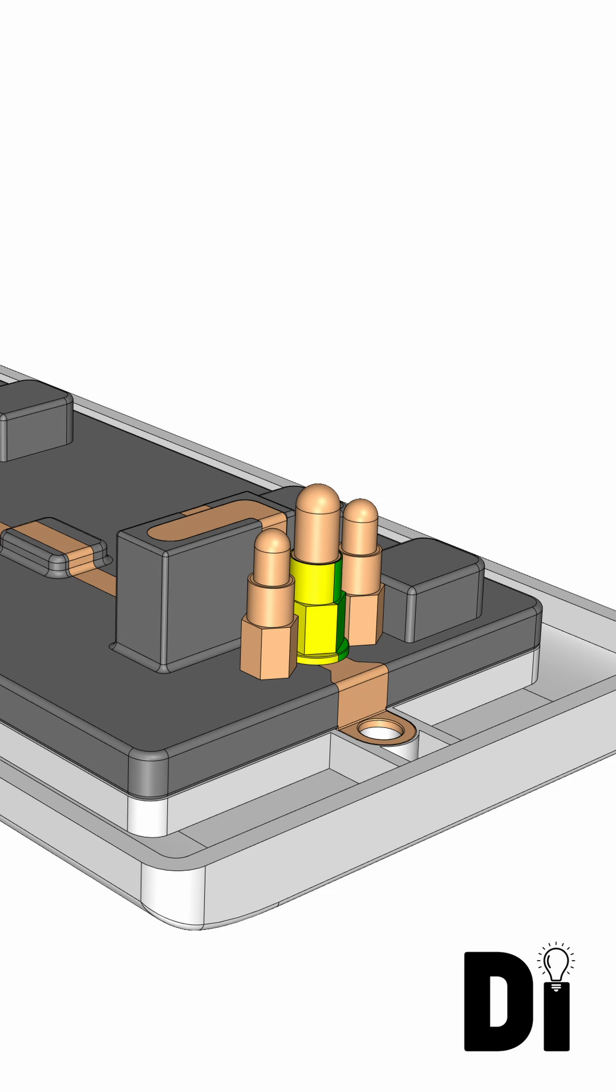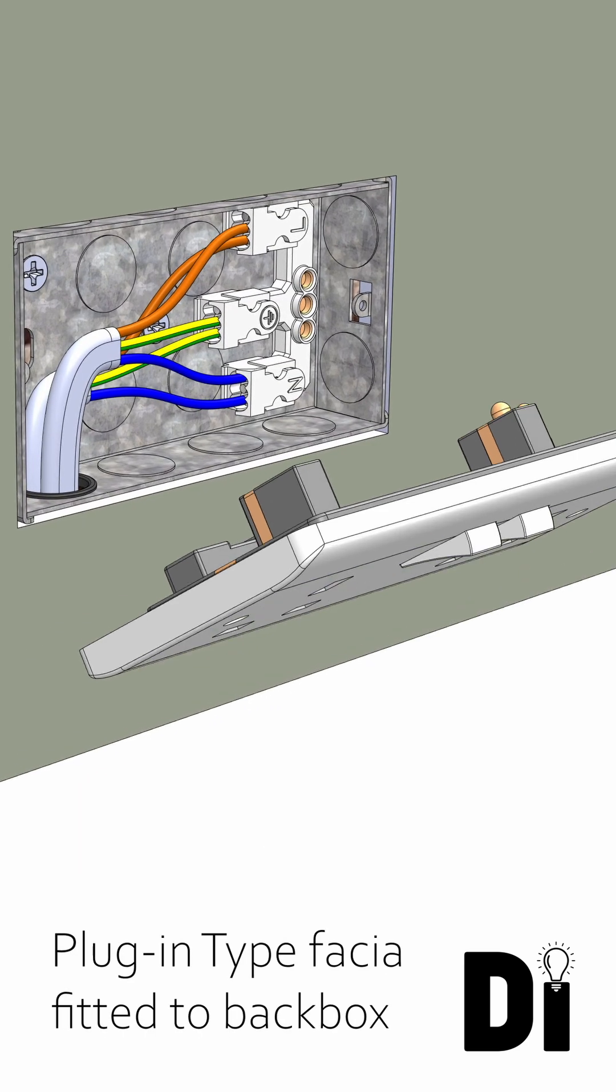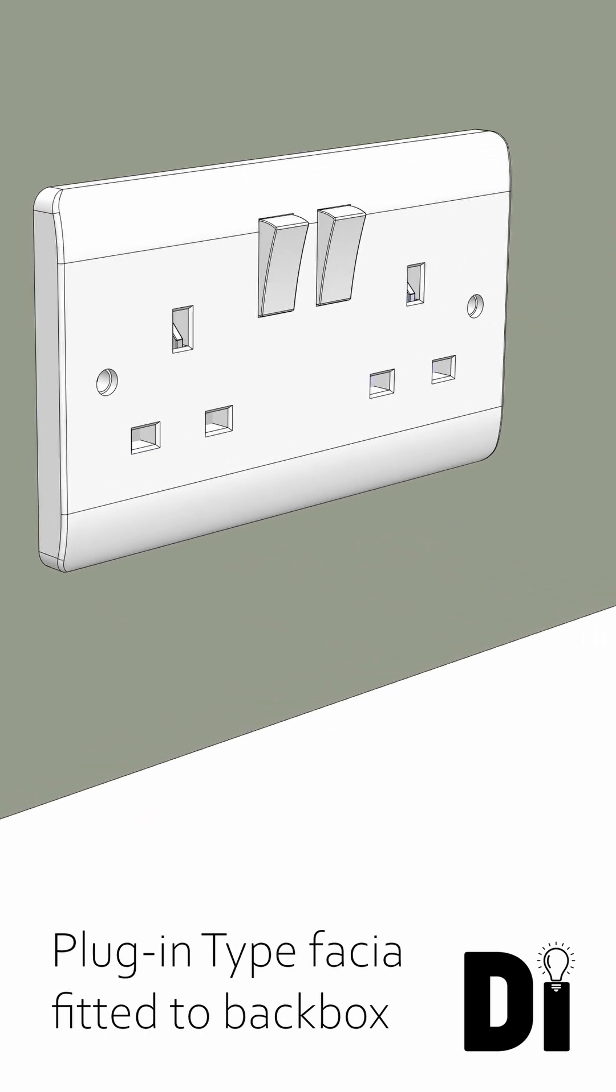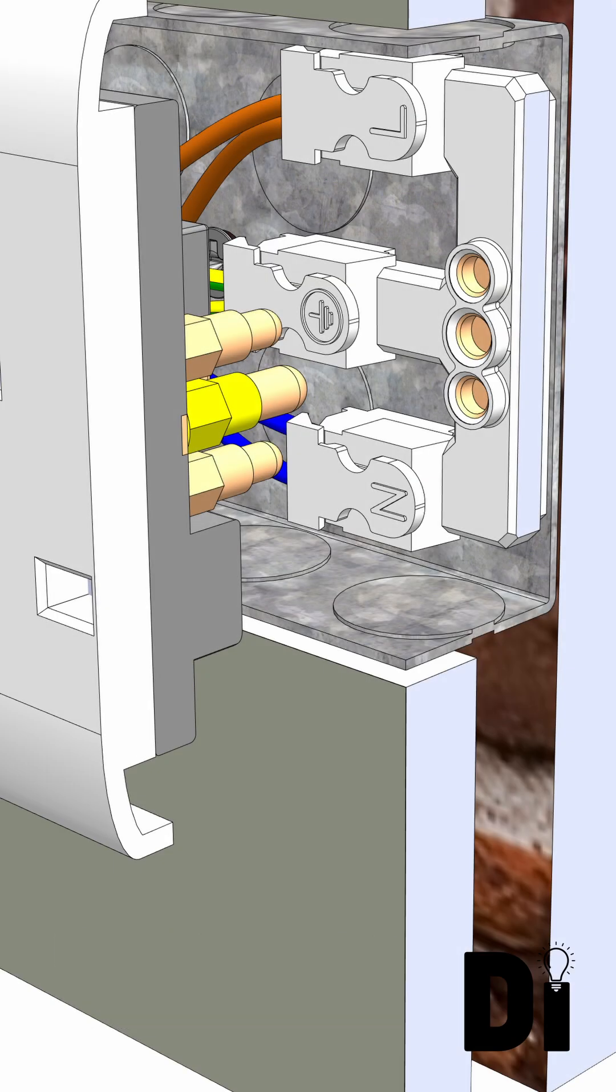For enhanced safety, the central earth pin is both longer and wider, ensuring that the earth connection is made first and preventing it from being inserted into the neutral or live inlets.